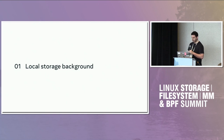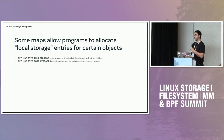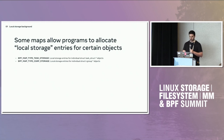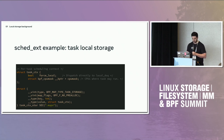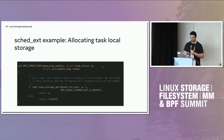We have local storage maps where, if you have a task struct or a cgroup struct, you can define a map type implementing storage for each of those types. For example, in sched_ext, if you have a task struct passed to the enqueue callback, you could have a BPF task storage map where you store something for that task, pass the task as a key, get back a pointer to some memory and query or write to it. The map might contain a boolean for forcing the task to be local — meaning stay on the current CPU — and a per-task CPU mask specifying which CPUs the task can run on.